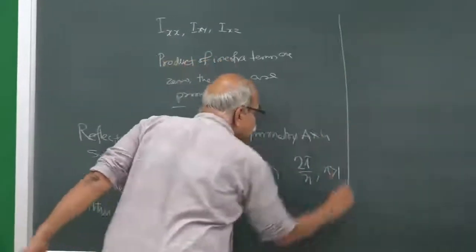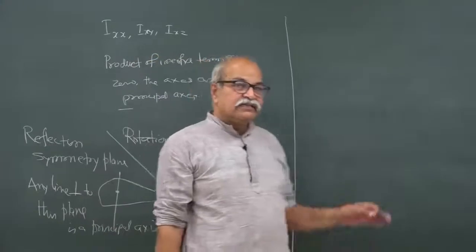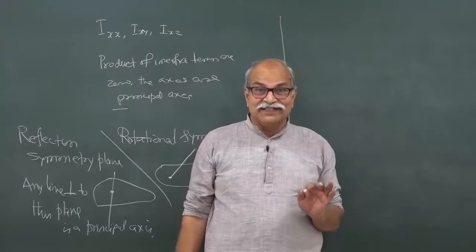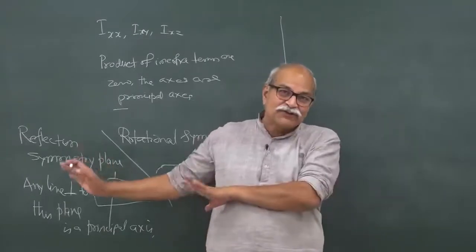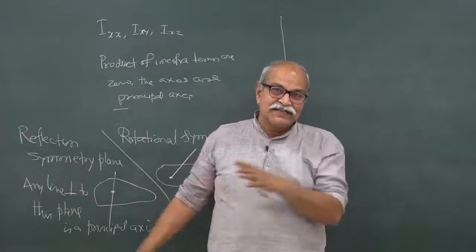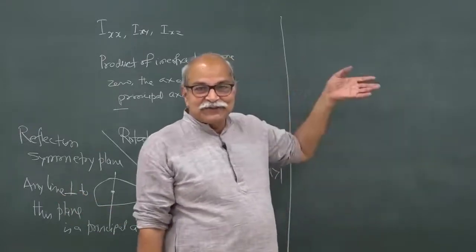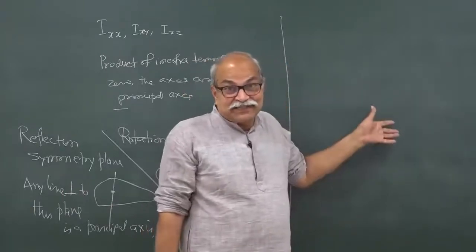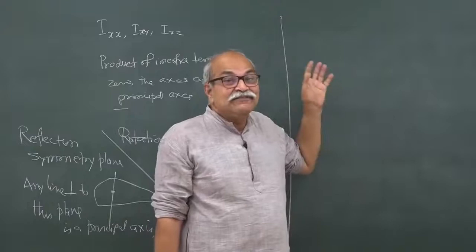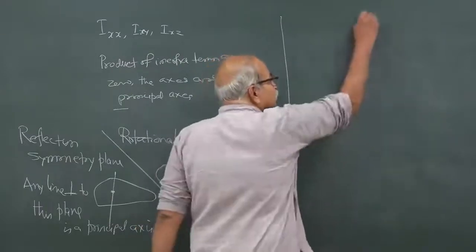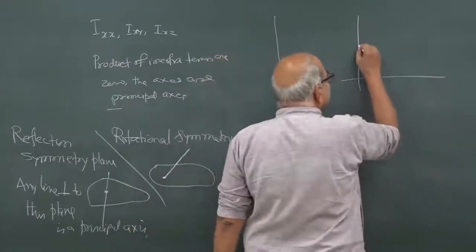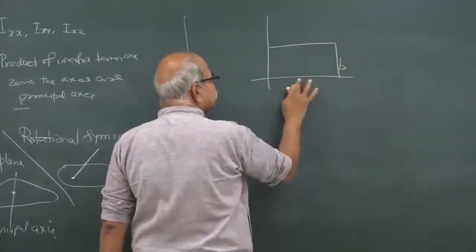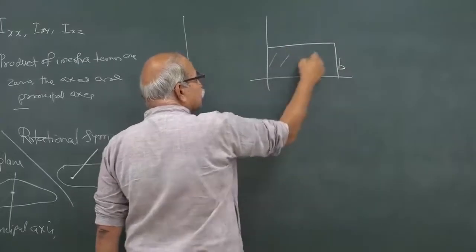The supplement I want to discuss today is that the choice of origin must not be forgotten. You first choose the origin and then look for all these axes. Otherwise, if you shift the origin or do not think of the origin, whether a particular line is a principal axis or not cannot be guaranteed. As an example, consider a uniform rectangular plate with length l and width b.